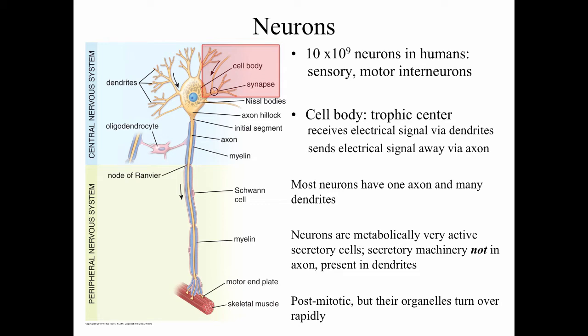There are a couple of exceptions — some neurons in the taste buds are unusual in that they can divide. But by and large neurons don't divide; however, the organelles of neurons do turn over fairly rapidly, and that turnover of organelles is actually very important for the economy of neuron function.